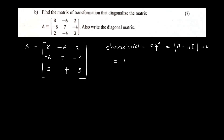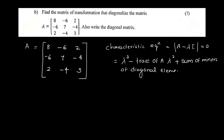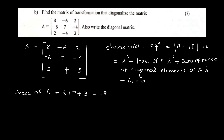For a 3×3 matrix, we use the equation: lambda cubed minus trace(A)·lambda squared plus sum of minors of diagonal elements·lambda minus determinant of A equals 0. The trace of A equals 8 plus 7 plus 3, which equals 18.